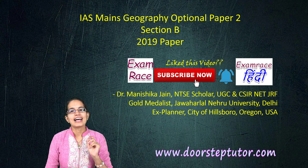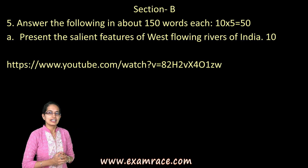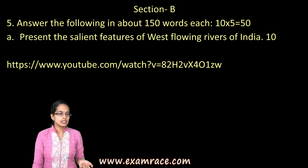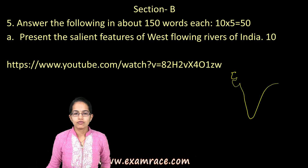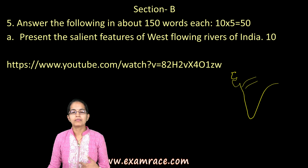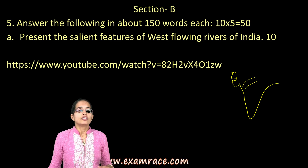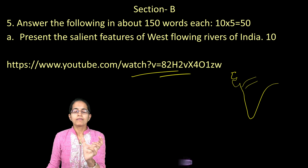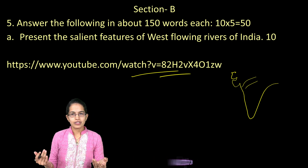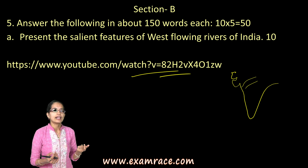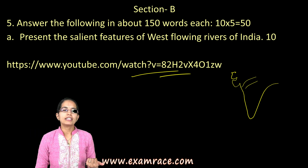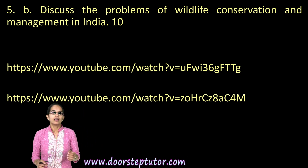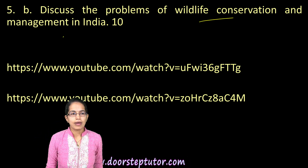Let's talk about the second paper and the second section for your 2019 geography paper. The very first question was the salient features of the west-flowing rivers. The major west-flowing rivers are Narmada and Tapti, then you have Mahi, Sabarmati and a few others. When we understand the differences between the east and the west flowing rivers, we automatically highlight the characteristics that help us understand the salient features of the west-flowing rivers — a very direct question.